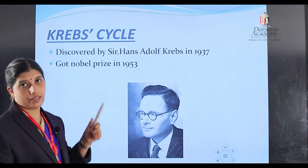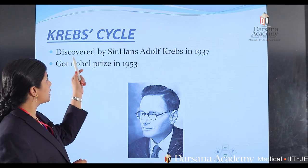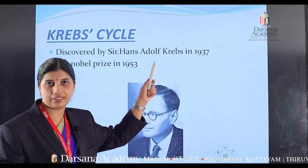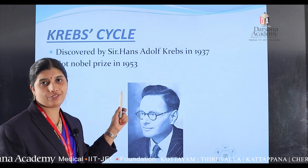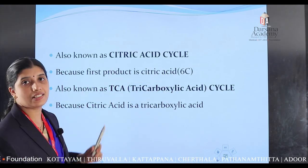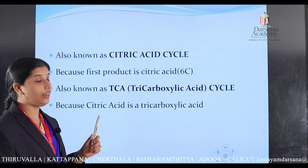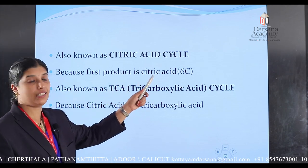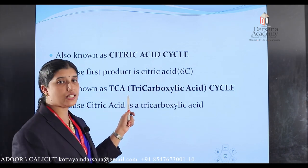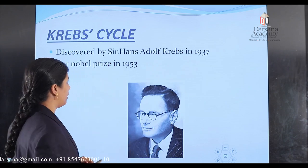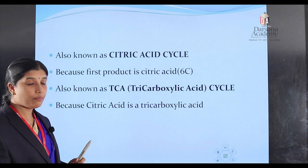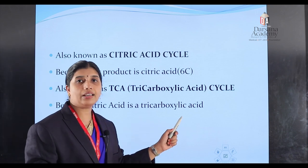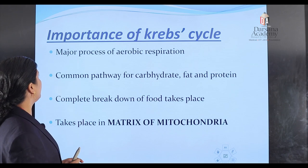Dear children, we are going to discuss the Krebs cycle, also called the citric acid cycle or TCA cycle — tricarboxylic acid cycle. It was discovered by Sir Hans Adolf Krebs in 1937, and he received the Nobel Prize in 1953. It is called the citric acid cycle because the first product is citric acid, a six-carbon compound, and it is called the TCA cycle because citric acid is a tricarboxylic acid.